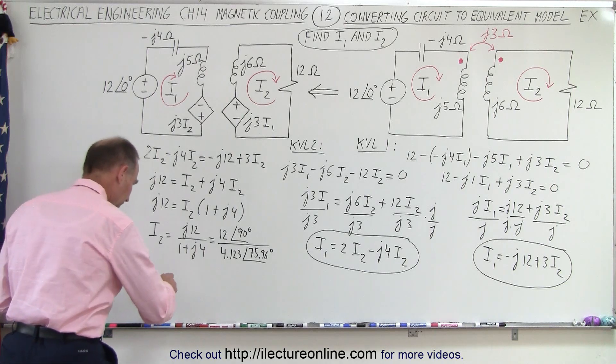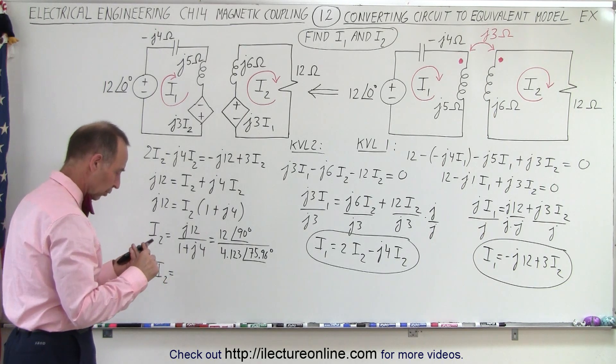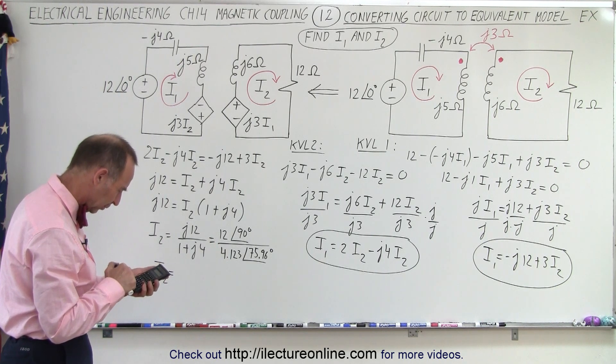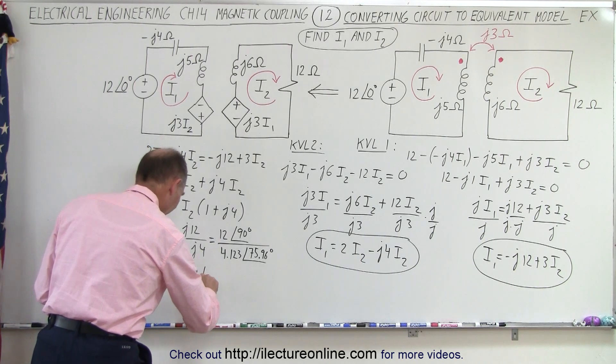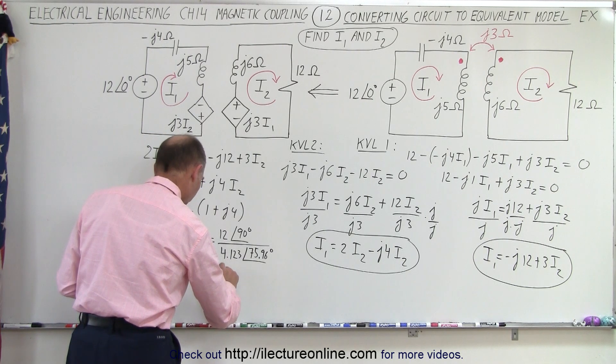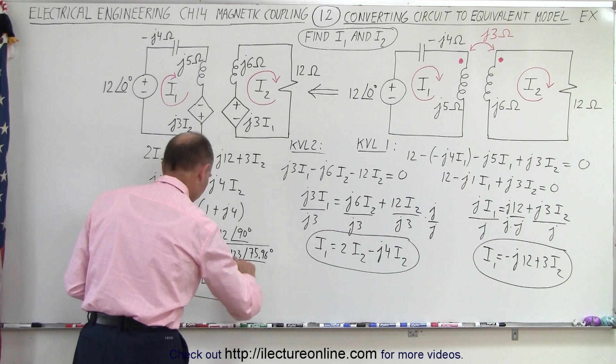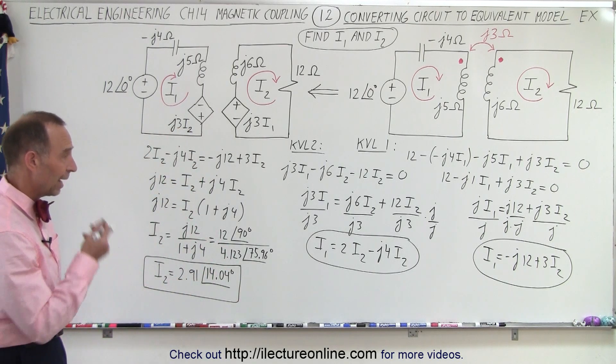Okay, so let's finish this up. We have I2 is equal to 12 divided by 4.123. That's 2.91 with a phase angle of 90 minus 75.96, that would be 14.04 degrees. And there we have it, our first current I2. All we have left to do is find the current I1.